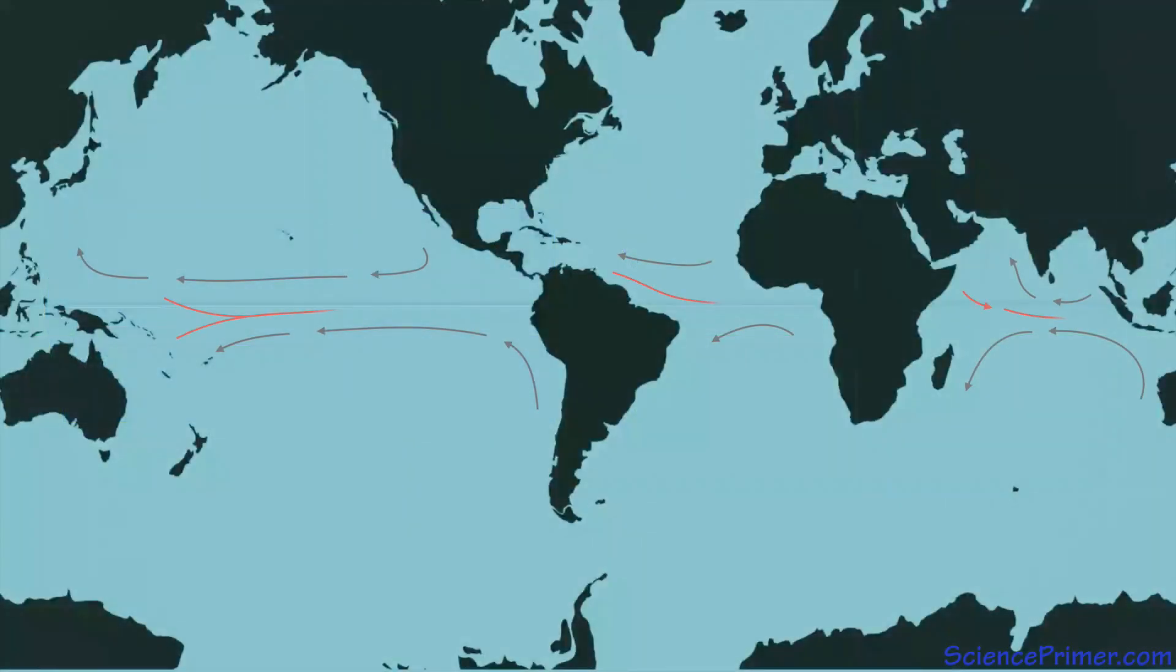Equatorial countercurrents and equatorial undercurrents are dynamic features of all three major equatorial ocean basins. Volumes and rates vary over the seasonal cycle, with the most dramatic seasonal variation occurring in the Indian Ocean, where the currents change in response to monsoon-driven changes in wind direction.